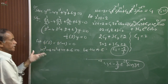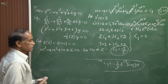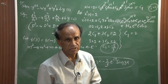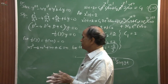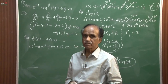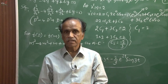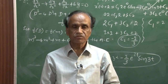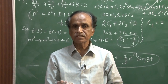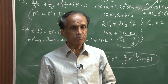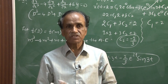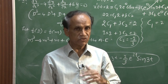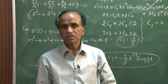Once one root is identified through trial and verification, we perform polynomial long division to obtain two factors — one linear and one quadratic. From those factors we can determine all roots. The full solution will be completed in the next lecture.